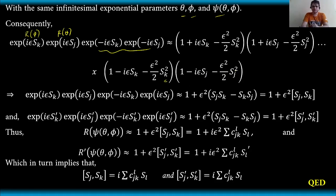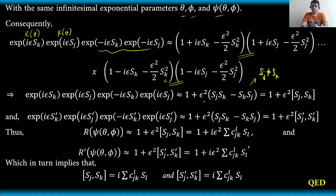Performing the cross product of these terms straightforwardly, we can obtain 1 plus epsilon squared times (Sj Sk minus Sk Sj). We can directly see that Sj is obviously not equal to Sk, because if they were equal, the second term would vanish and the exponents would equal one. This is precisely the definition of the commutation of two generators, which can be written simply as 1 plus epsilon squared times the commutator [Sj, Sk].